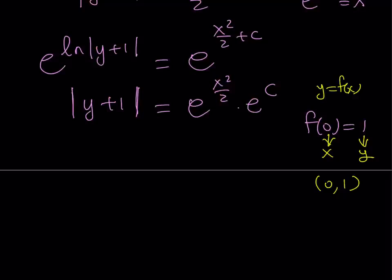Now, we're going to go ahead and substitute it. And when we do replace y with 1, it's going to give us the absolute value of 2. And then e to the power 0 times e to the power c. Great.